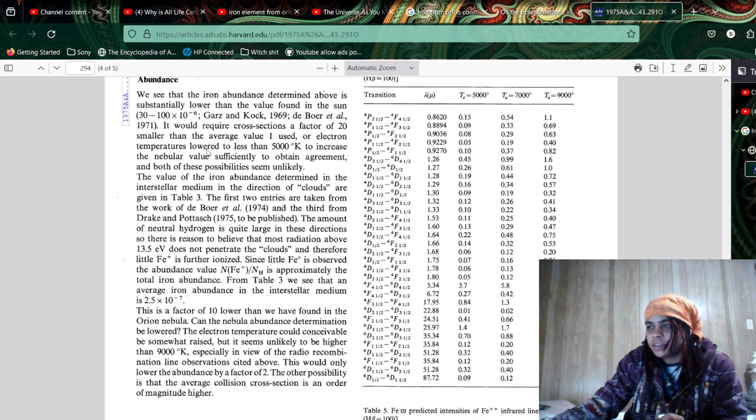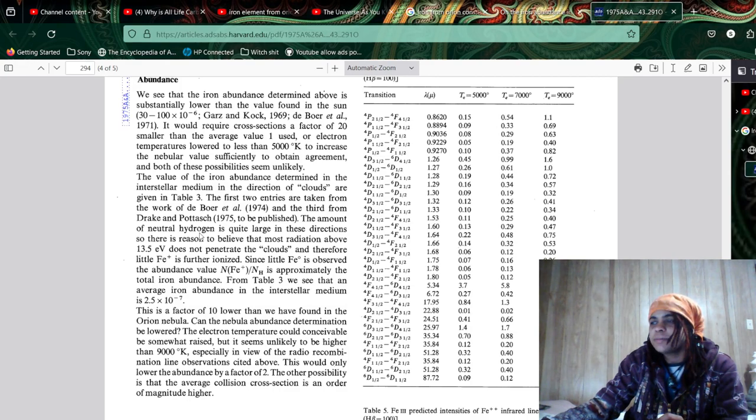We see that the iron abundance determined above is substantially lower than the value found in the sun. It would require a cross-section, a factor of 20 smaller than average value one use, or electron temperatures lower than less than 5,000 K. To increase the nebular value sufficiently to obtain agreement. In both of these possibilities seem unlikely. The value of the iron abundance determined in the interstellar medium in the direction of clouds are given in Table 3. The first two entries are taken from the work of Daborela or AR. Wait. Daborela? I'm not trying that ever again.